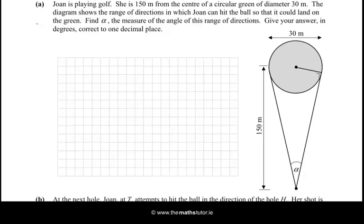Okay, so let's have a good look at this and we can see that if the diameter of the circular green is 30, then the radius is 15. We know that the length from where she's hitting the shot to the centre of the green is 150 metres. These are all in metres.